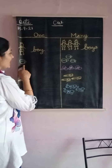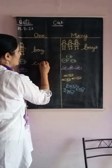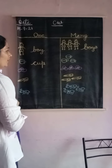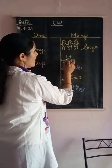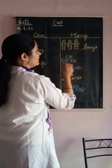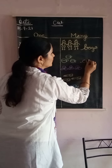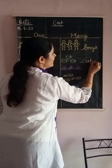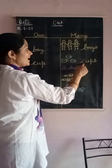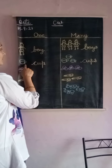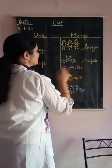Next — what is this? Cup. C, U, P — cup. Now here are more than one: one, two, three cups. So we will put S: C, U, P, S — cups. Easy! Single: cup. More than one: cups.